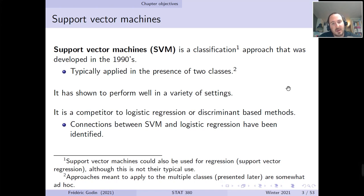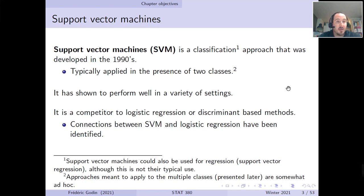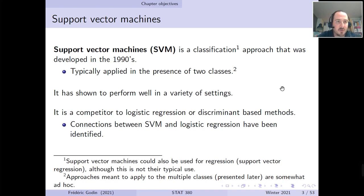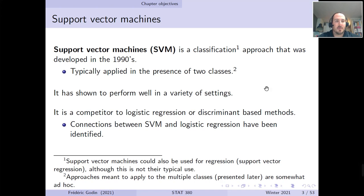This method is a competitor to logistic regression and discriminant-based methods introduced in earlier chapters. Support vector machines are an additional method that you can try to model some data. Connections have been identified between support vector machines and logistic regression — we won't dig very deep into that, but to let you know, these methods, although they're different, have parallels that were unveiled in the literature.